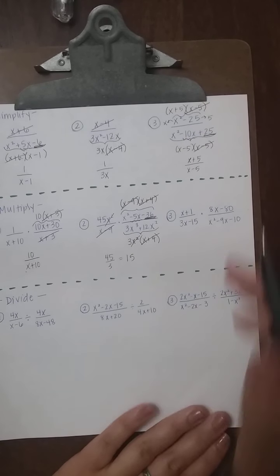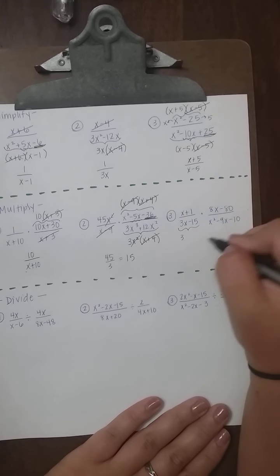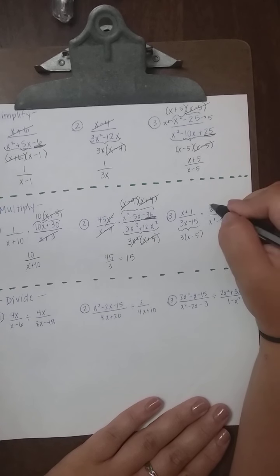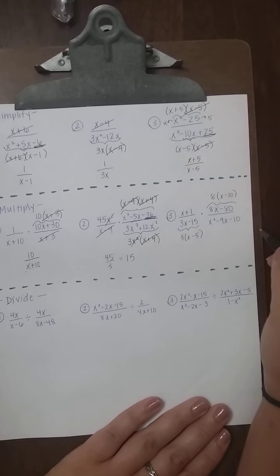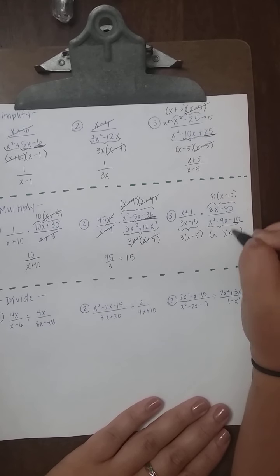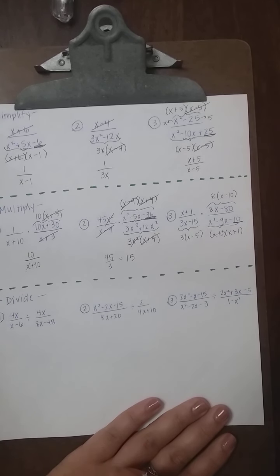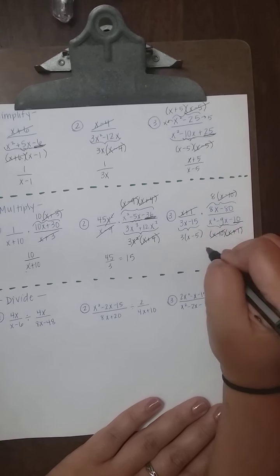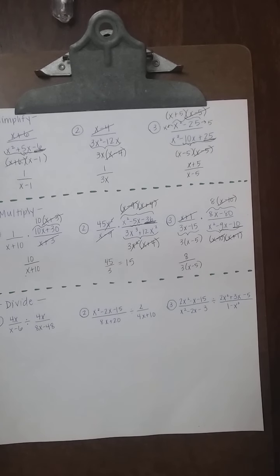Example 3: (x + 1) over (3x − 15) times (8x − 80) over (x² − 9x − 10). Factor 3x − 15 with GCF of 3: 3(x − 5). Factor 8x − 80 with GCF of 8: 8(x − 10). Factor the Plain Jane trinomial: multiply to −10, add to −9, giving (x − 10)(x + 1). Cancel (x + 1) and (x − 10), leaving 8 over 3(x − 5), which doesn't simplify further.